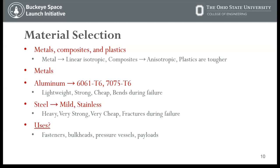6061-T6 is the most common alloy you'll be using — used in aircraft structures, very good general aluminum, cheaper than 7075, and you can weld and machine it pretty easily. 7075-T6 is what's considered an aerospace aluminum — very common in aircraft, spacecraft, anything in the aerospace industry. It's a little stronger than 6061 and a little more expensive, but not by much. Both are available from McMaster, a common vendor we use.